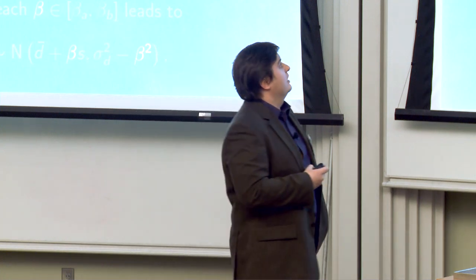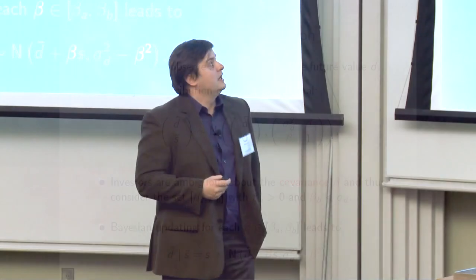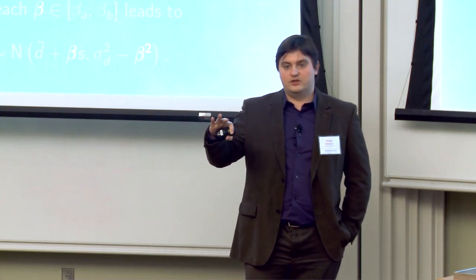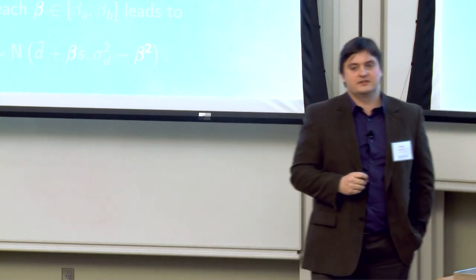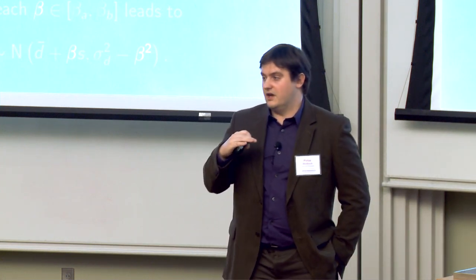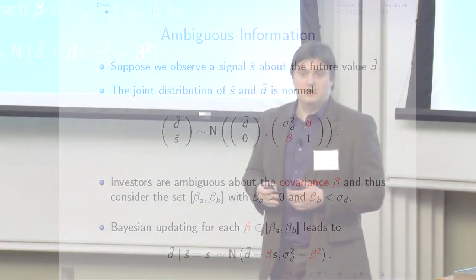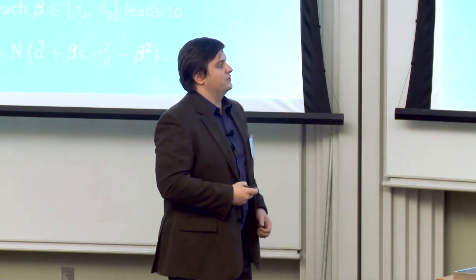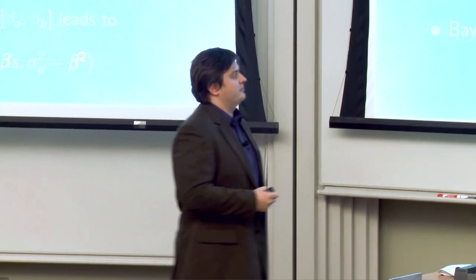Now let's look at the information structure. Suppose we observe a signal before taking an action about the future value of the asset D-tilde. We write down the joint distribution of the signal and the dividend, assuming it's normal. The marginal distribution of the dividend has mean D-bar and variance sigma-D squared. There's no ambiguity about the marginal distribution of the dividend or the signal — we normalize the mean of the signal to zero and the variance to one. What we're interested in is ambiguity about the covariance between the signal and the dividend, which I denote beta. Investors are ambiguity-averse in the sense of Gilboa and Schmeidler, and have a set of possible covariances, beta-A and beta-B.